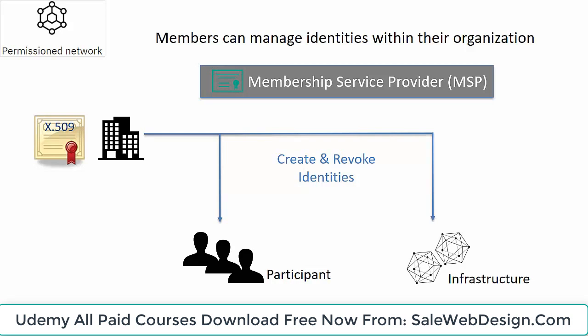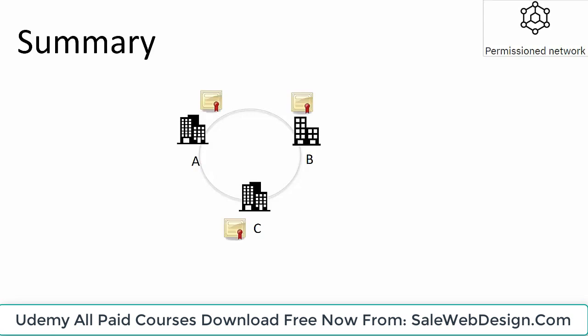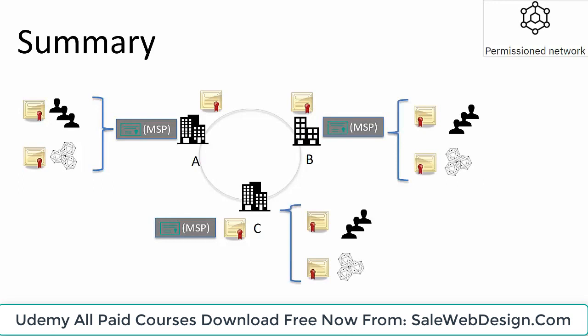Members can use their certificate to create new valid identities that can participate on the network, and can also create certificates for their infrastructure components. As a result, the Hyperledger Fabric network can have one or more MSP components. In summary, Hyperledger is a permissioned network — all entities have an identity assigned by way of X.509 certificates. Certificates are issued to participants, infrastructure components, and members. Members are legally separate entities that have adopted blockchain for process automation, and depending on their authority, they may use an MSP to create participant and infrastructure component identities within their organization.